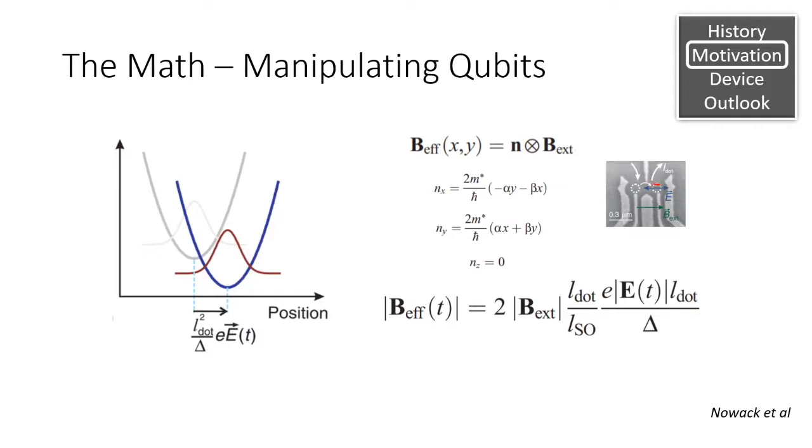The math gets a bit hairy, so let's break this down. This electron here is currently subjected to a constant magnetic field. So as we subject it to an oscillating electric field, we cause the position of the electron to shift. As we see here, the magnetic field that the electron experiences is affected by its position.